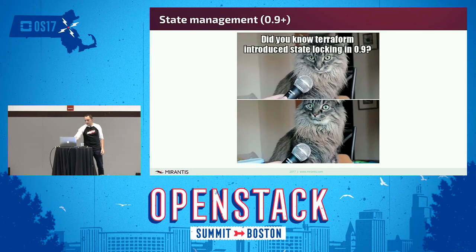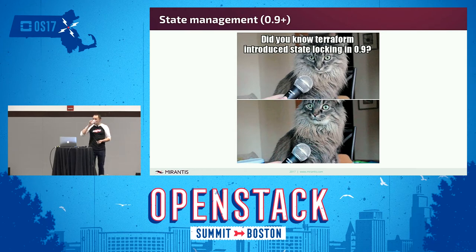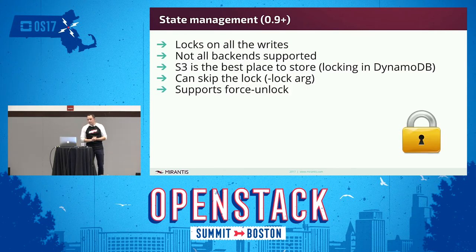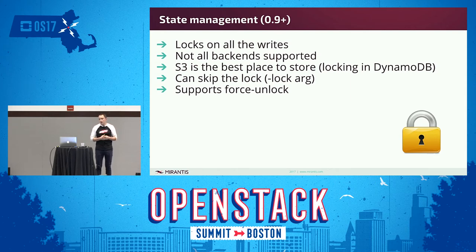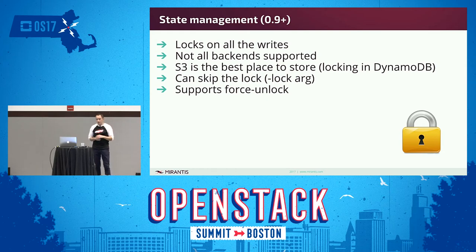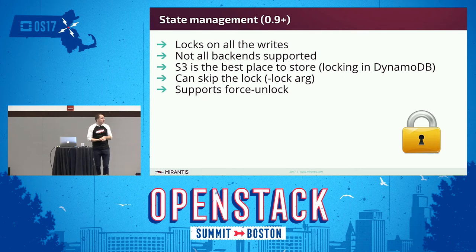After working around these issues for a while, in version 0.9 HashiCorp introduced state locking in Terraform. This gives you the ability to lock all writes if somebody is already running `terraform apply`. Unfortunately, not all backends are supported yet — Swift is not supported. Amazon S3 with DynamoDB locking is probably the best option. With all that said, I still believe the CI system is the better choice right now — it's a more reliable and safe way to run Terraform applies.